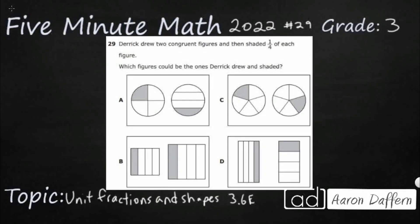Hello, and welcome to 5-Minute Math. Today we are looking at the third grade concept of unit fractions and shapes. This is standard 3.6e in the great state of Texas, and we are using item number 29 of the 2022 released STAR test.